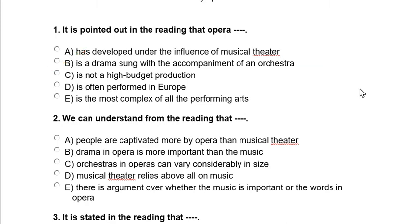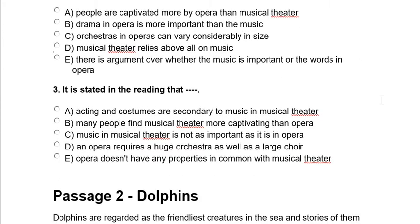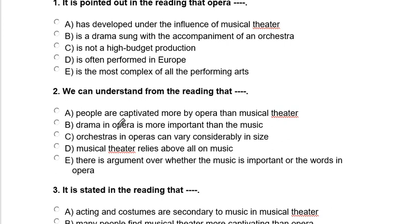The next question is: 'We can understand from the reading that...' Option A: people are captivated more by opera than musical theater. Option B: drama in opera is more important than the music. Option C: orchestras in operas can vary considerably in size. We have to find the option that is actually stated in the passage — we can't use our own knowledge. Option C is given in the passage, so option C is the correct answer for number 2.